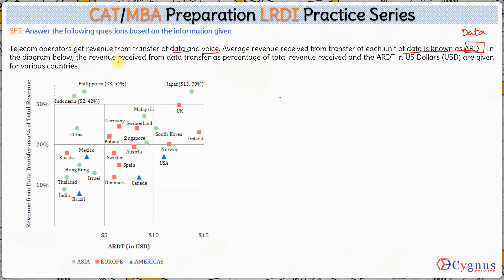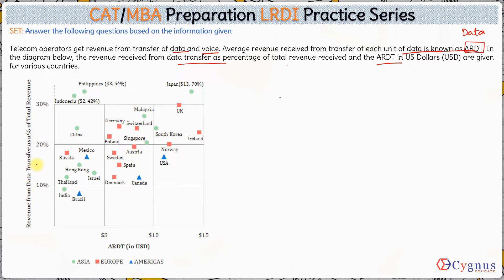In the diagram below, the revenue received from data transfer as a percentage of total revenue and the ARDT are given for various countries. On one axis we have ARDT — that is the average revenue per unit of data — and on the other axis we have the percentage of revenue from data transfer out of total revenue.